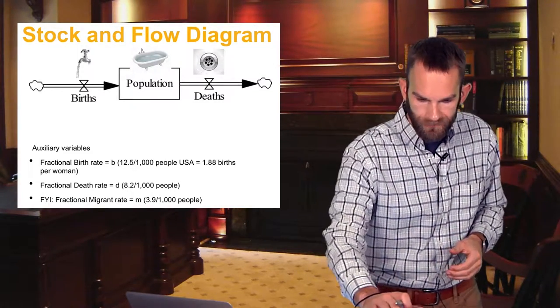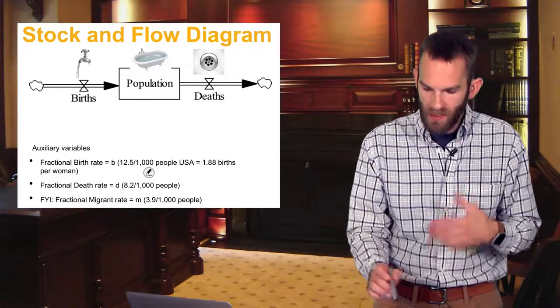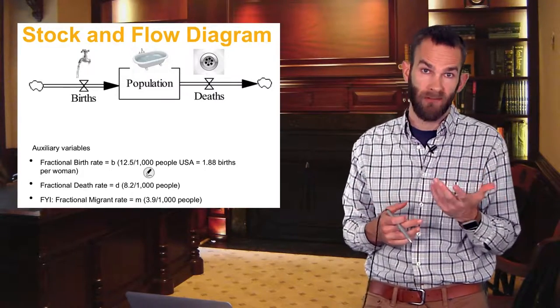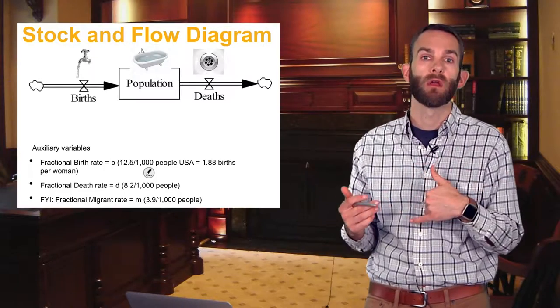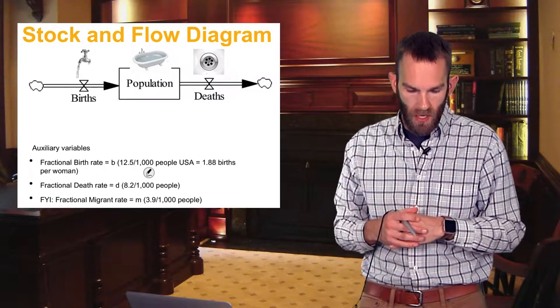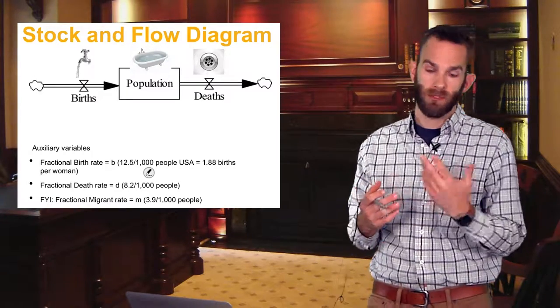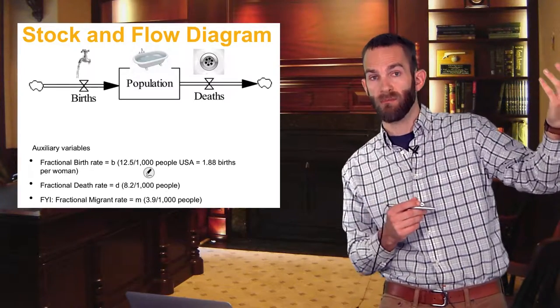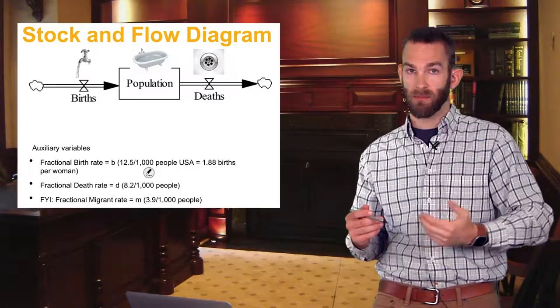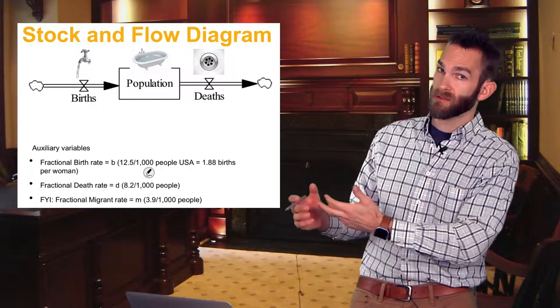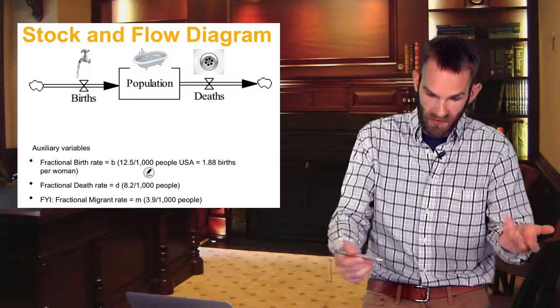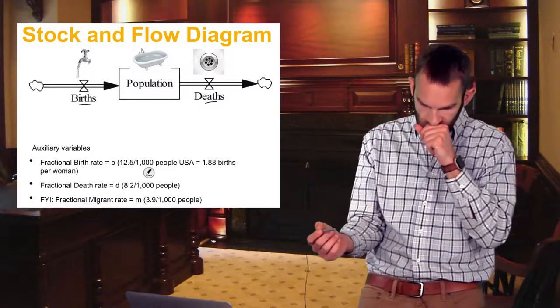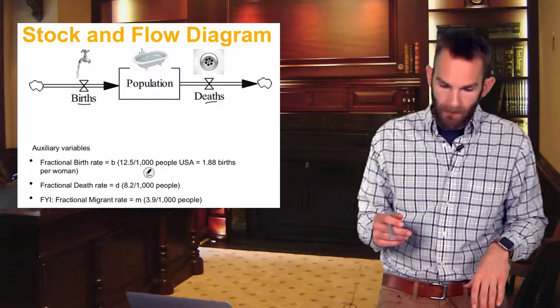I pulled these numbers not too long ago. Right now, for every thousand people, United States, we have about 12 and a half births, which basically equates to a little under two children per woman. The death rate right now is about 8.2 per thousand people. So that tells us 12.5 per thousand of people getting born and then 8.2 per thousand people dying. What does that tell us? That tells us that our births are greater than our deaths.